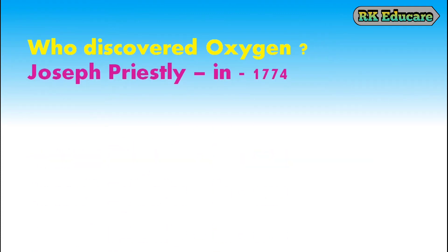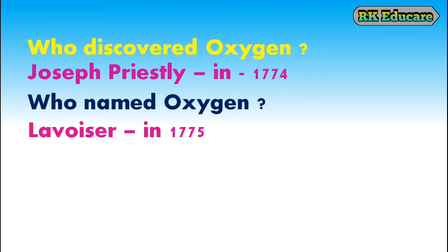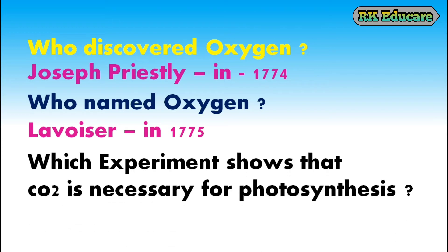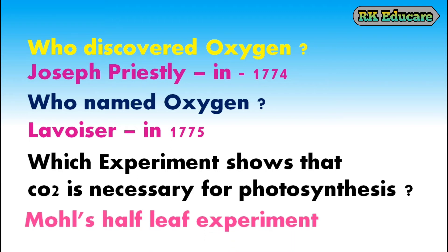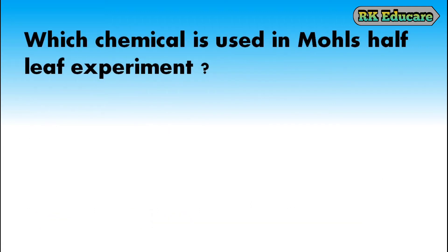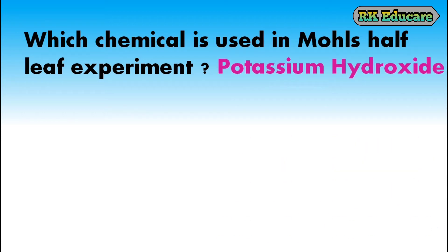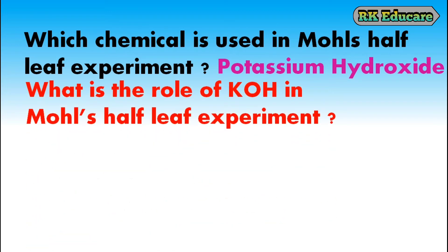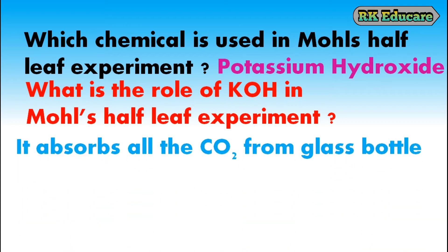Who discovered oxygen? Joseph Priestley discovered oxygen in the year 1774. Who named oxygen? Lavoisier named oxygen in the year 1775. Which experiment shows that carbon dioxide is necessary for photosynthesis? Molisch's leaf experiment shows that carbon dioxide is necessary for photosynthesis. Which chemical is used in Molisch's leaf experiment? Potassium hydroxide is used in Molisch's leaf experiment. The role of KOH is to absorb all the carbon dioxide from the glass bottle.